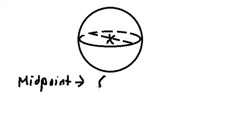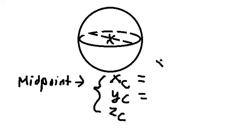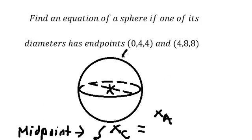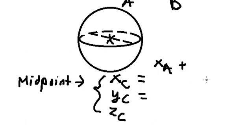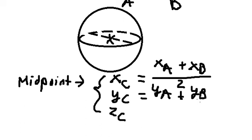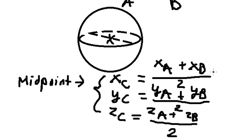That means we have xc, yc, and zc for the center. We use the formula: xc = (xa + xb)/2, similar for yc = (ya + yb)/2, and the last one zc = (za + zb)/2.